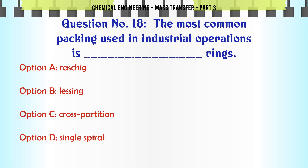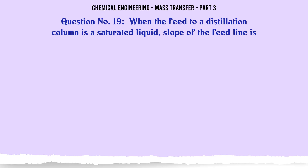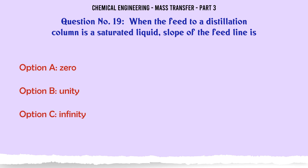Most common packing rings: A) Raschig, B) Lessing, C) cross partition, D) single spiral. The correct answer is: Raschig. When the feed to a distillation column is a saturated liquid, the slope of the feed line is: